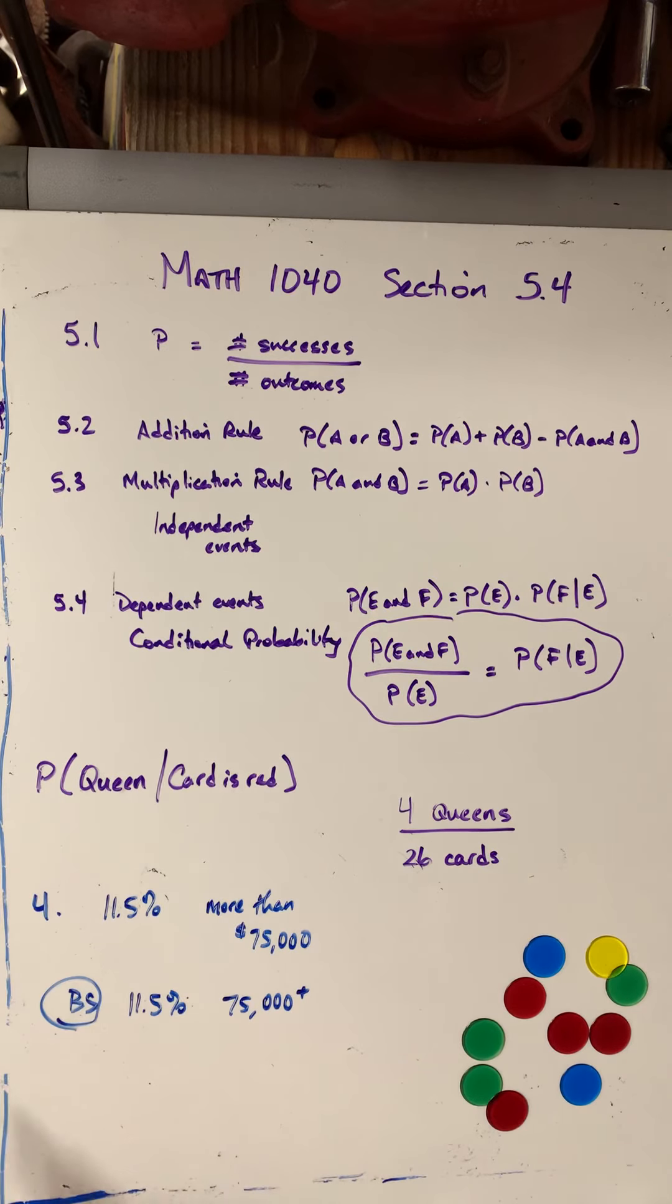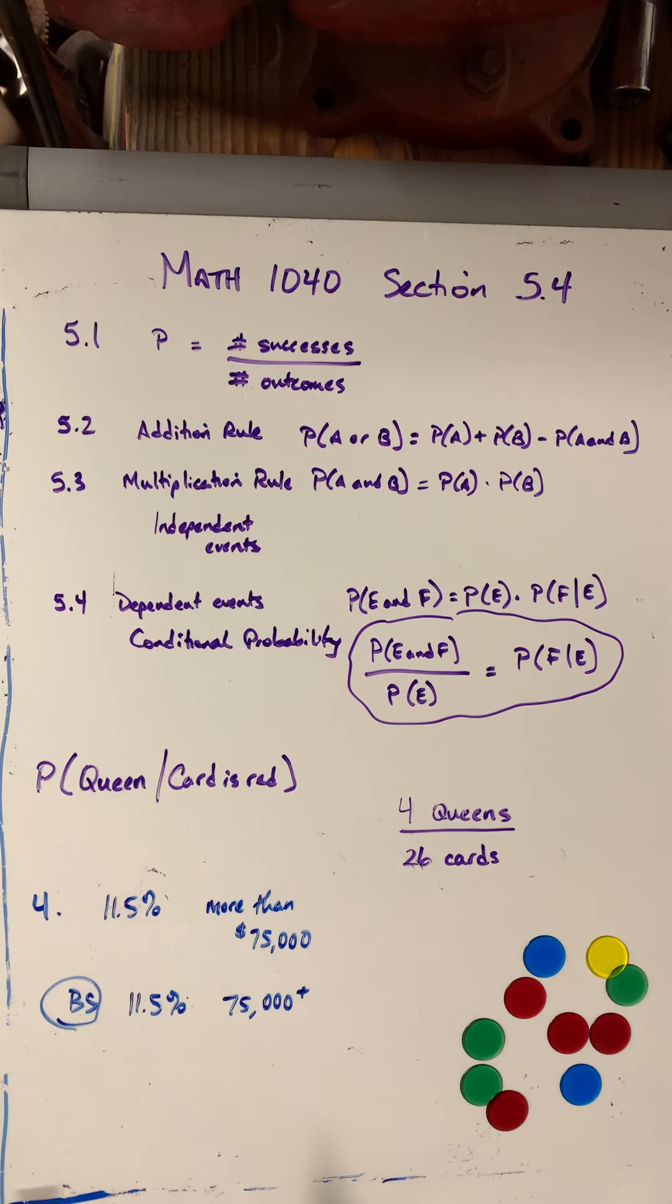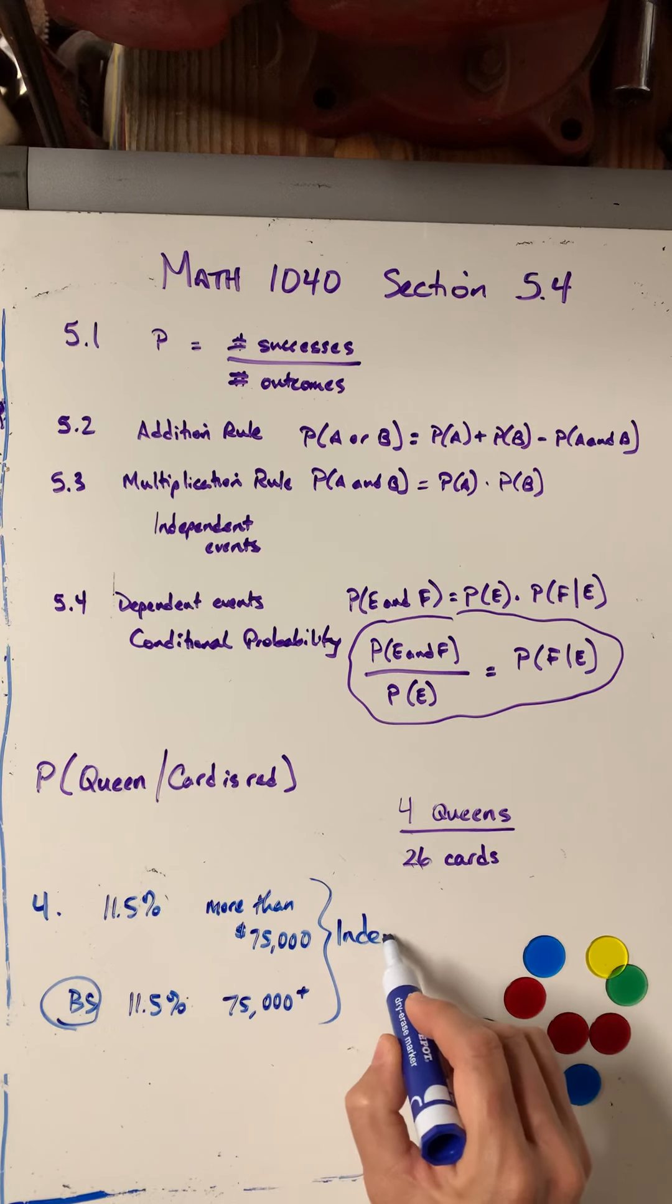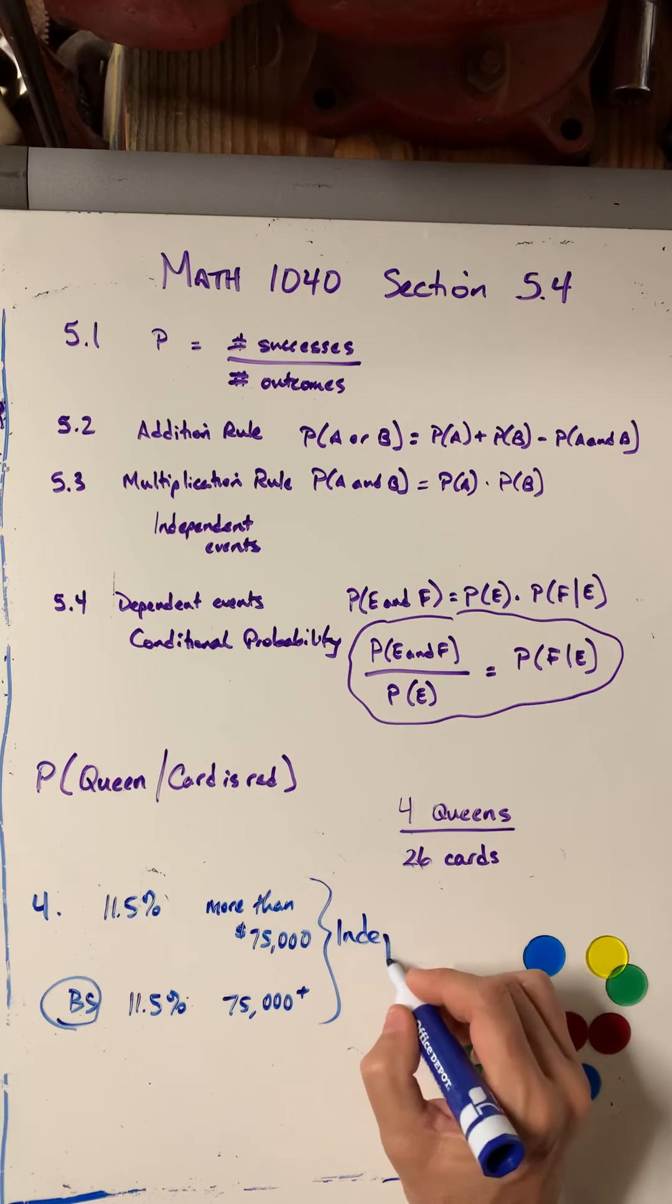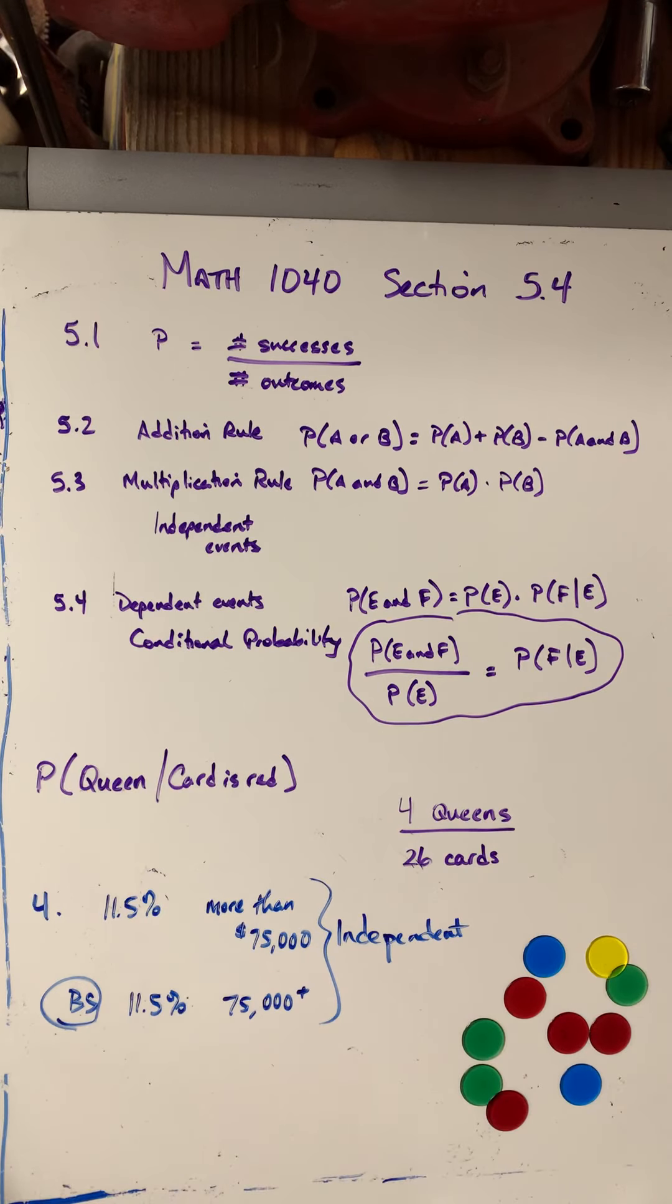So we're looking at this and going, wait a minute, this condition of reducing our sample size to only people with bachelor's degrees did not change the probability. And if the condition imposed does not change the probability, then we say that these are independent. The one did not depend on the other.